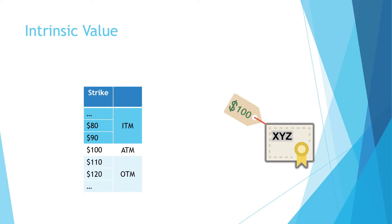Let's look at strike 80. If we own this contract, we can exercise it to buy shares at $80 per share even though the current market price is $100 per share. If we sell the shares right back to the market, there is an instant $20 gain per share. Therefore, this contract has an intrinsic value of $20 per share. For strike 90, we can exercise to buy shares at $90 and sell back at $100, giving an instant gain of $10 per share — so the intrinsic value is $10 per share.